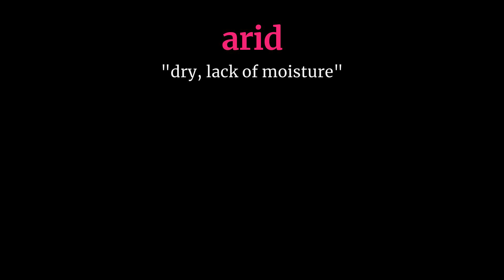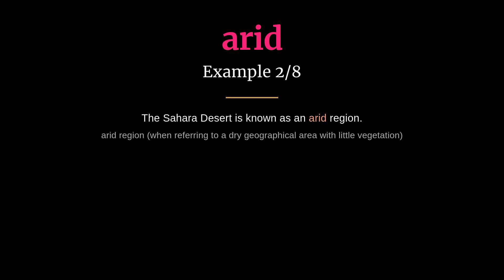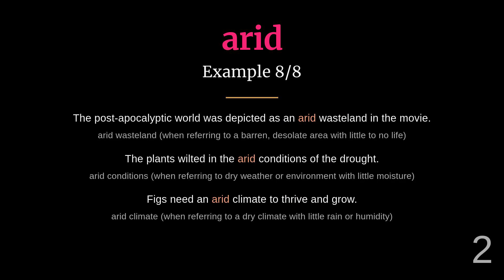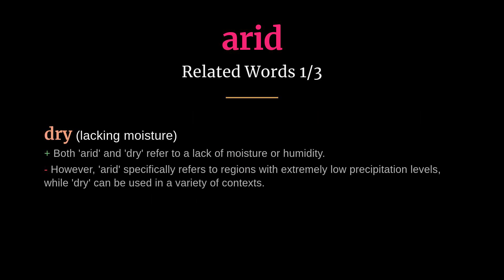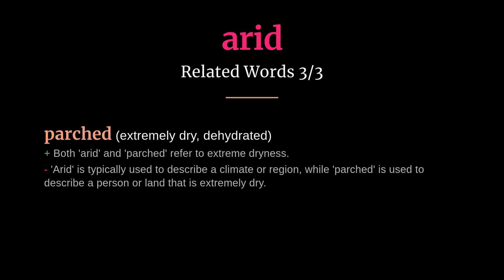Arid — meaning dry, lack of moisture. Many deserts have an arid climate. The Sahara Desert is known as an arid region. Related words: dry, desolate, parched.